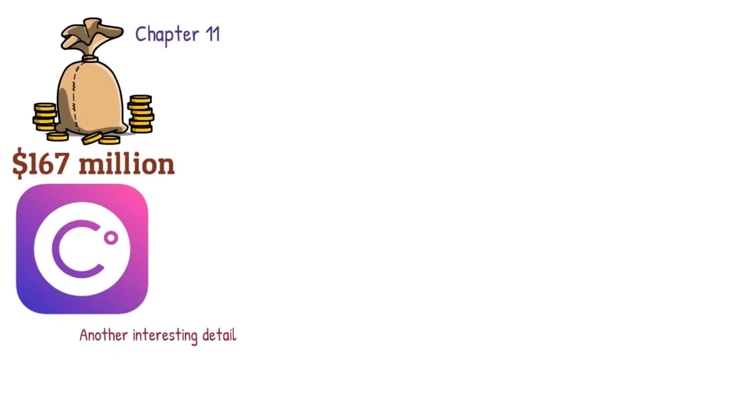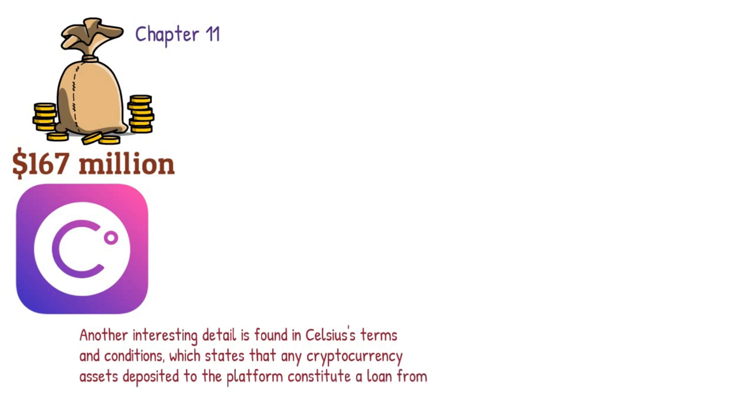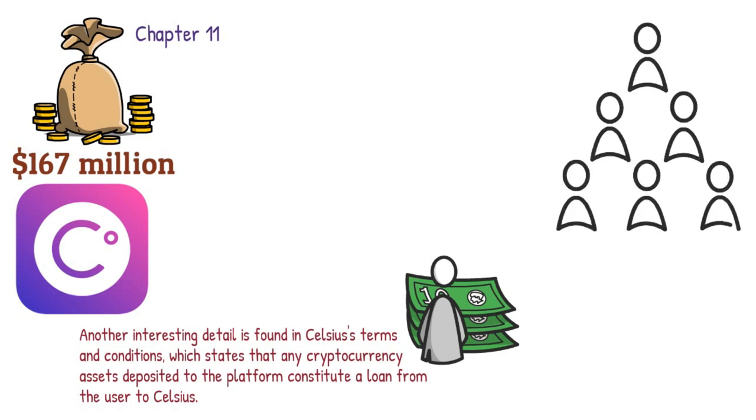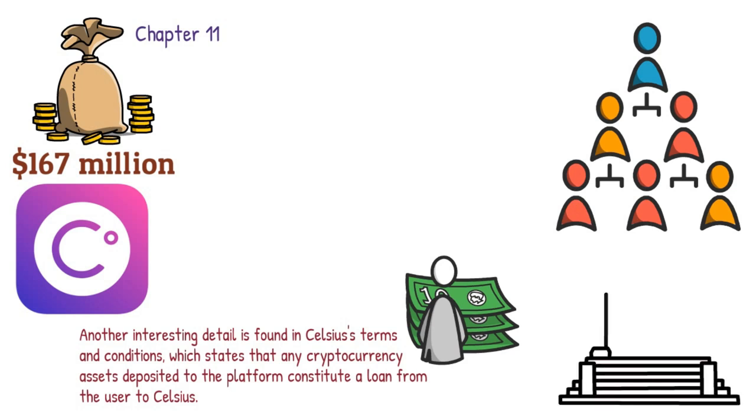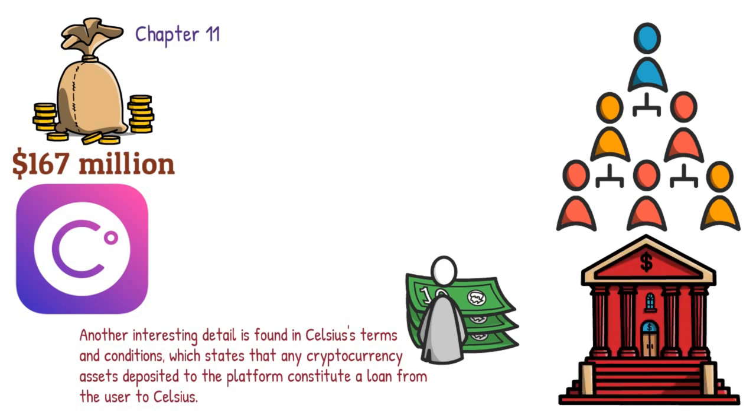Another interesting detail is found in Celsius' terms and conditions, which states that any cryptocurrency asset deposited to the platform constitutes a loan from the user to Celsius. Customer funds might be viewed as unsecured loans to the platform because Celsius has not put up any collateral. Additionally, customers may not have any legal rights in connection with Celsius' commitments in the event of bankruptcy, and any eligible digital assets used in the earned service or as collateral under the borrow service may not be retrieved.